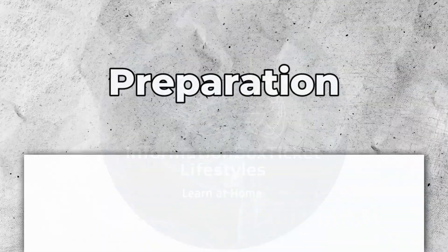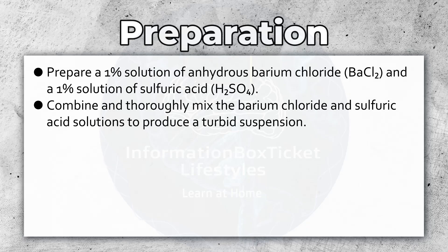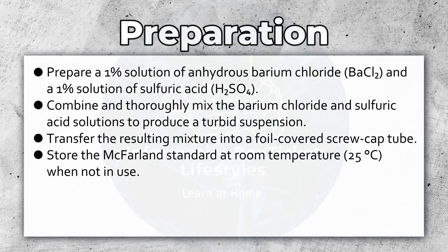Preparation of McFarland Standards. Prepare a 1% solution of anhydrous barium chloride and a 1% solution of sulfuric acid. Combine and thoroughly mix the barium chloride and sulfuric acid solutions to produce a turbid suspension. Transfer the resulting mixture into a foil-covered screw cap tube. Store the McFarland Standard at room temperature, 25 degrees Celsius, when not in use.